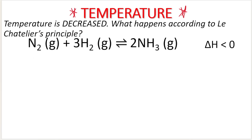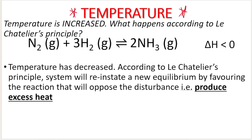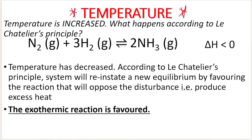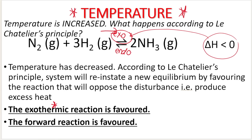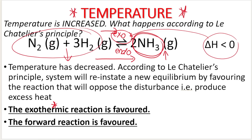Let's do the opposite scenario: temperature is decreased, so making it colder. The system wants to do the opposite — if we've made it colder, the system wants to make it hotter. Temperature has been decreased; according to Le Chatelier's principle, the system will reinstate a new equilibrium by favoring the reaction that will oppose the disturbance. We want to produce excess heat, and to produce more heat we need to favor the exothermic reaction. The forward reaction is exothermic, so the forward reaction is favored. This means we increase the concentration of ammonia and decrease the concentrations of nitrogen and hydrogen.